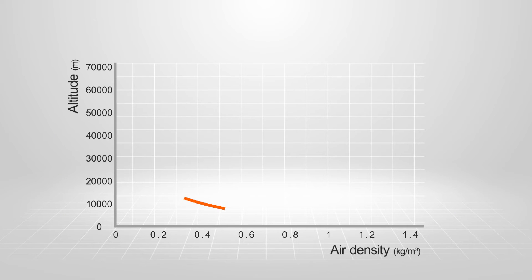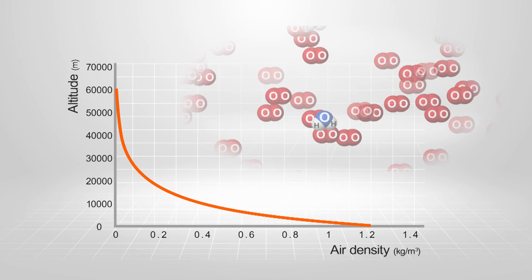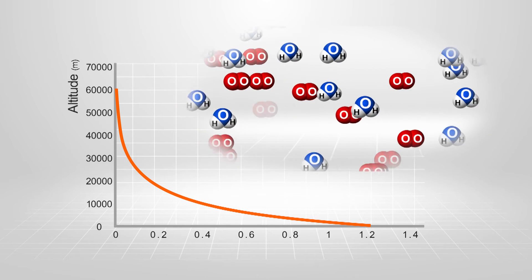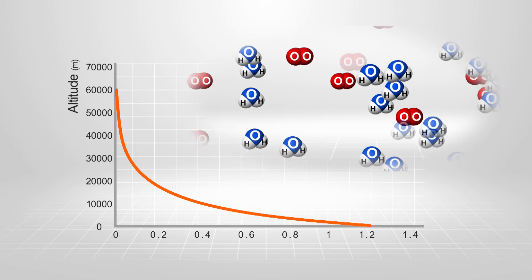Barometric pressure also has an effect on the air induction system. The higher the elevation the thinner or less dense the air. Barometric pressure also affects the amount of water vapour that can be held in the air.